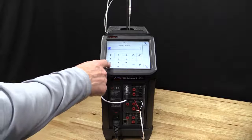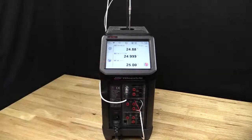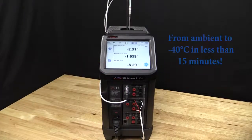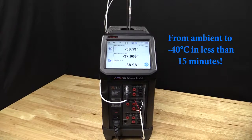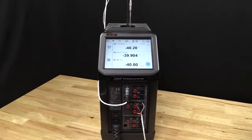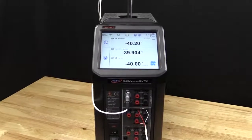Atatel's reference grade drywells are best in class when it comes to speed. With the 878-160, you'll have the ability to move from ambient to minus 40 degrees C in less than 15 minutes. You won't find a faster reference grade heat source on the market.